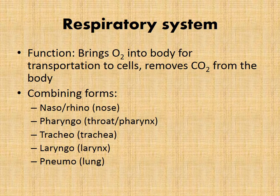Our respiratory system brings oxygen into our body for transportation to the cells and also removes carbon dioxide. Combining forms include naso or rhino for nose, pharyngo for the throat and pharynx, tracheo for trachea, laryngo for larynx, and pneumo — like pneumonia — which refers to the lungs.